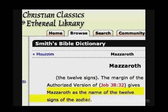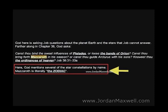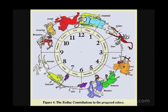Another source confirms: God mentions several star constellations by name, and Mazaroth is literally the Zodiac. Here is a Jewish Hebrew Zodiac, and you will notice that the twelve months of the year are assigned to twelve constellations of the Zodiac.